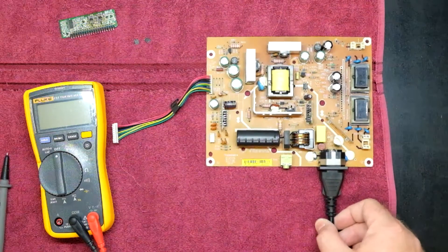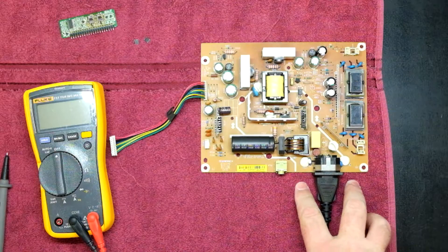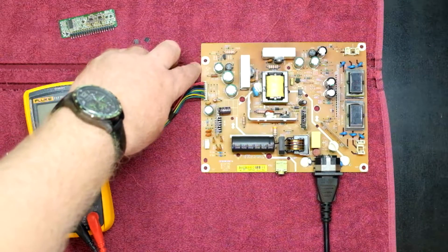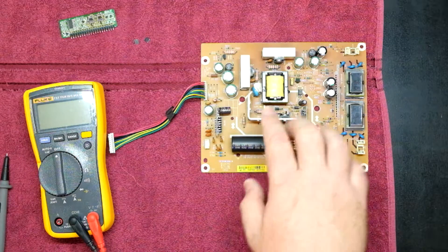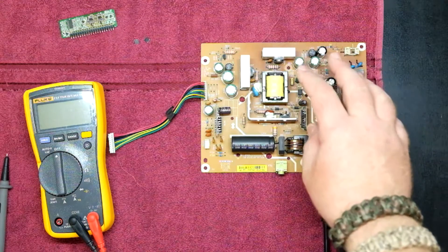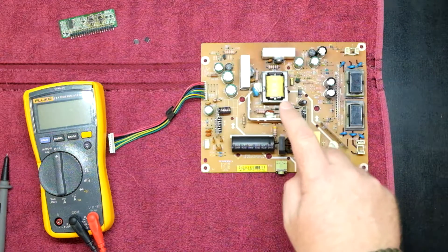The first thing you need to look for is the permanent standby voltage. This power supply has five volts permanently on. Some power supplies have two different subsections with a smaller transformer.